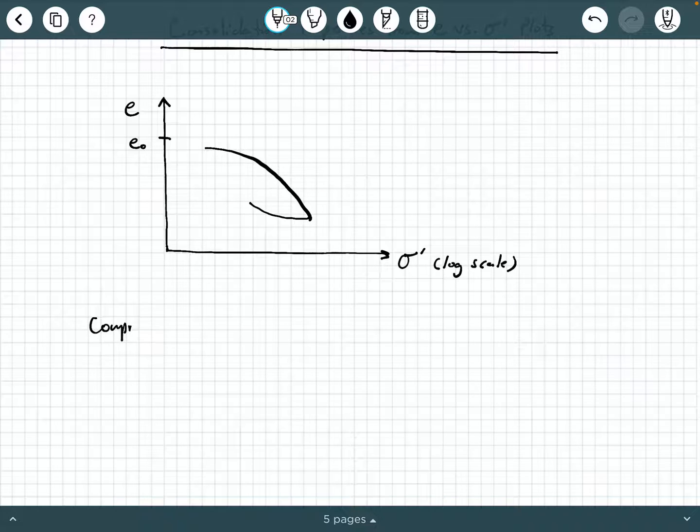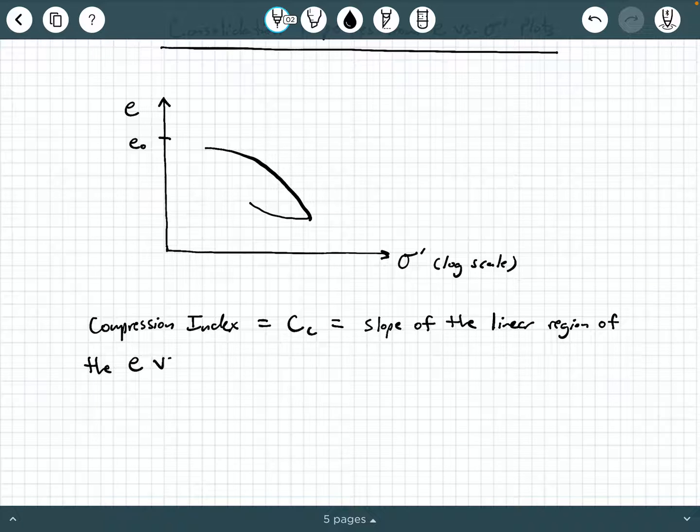So let's start with our first property that we want to figure out or estimate using one of these plots. That's going to be called the compression index, abbreviated C sub C. This is going to be the slope of the linear, or really approximately linear region of the e versus sigma prime plot at the end of loading increase. So what we do is we project a straight line from this point that is approximately tangent to the loading diagram.